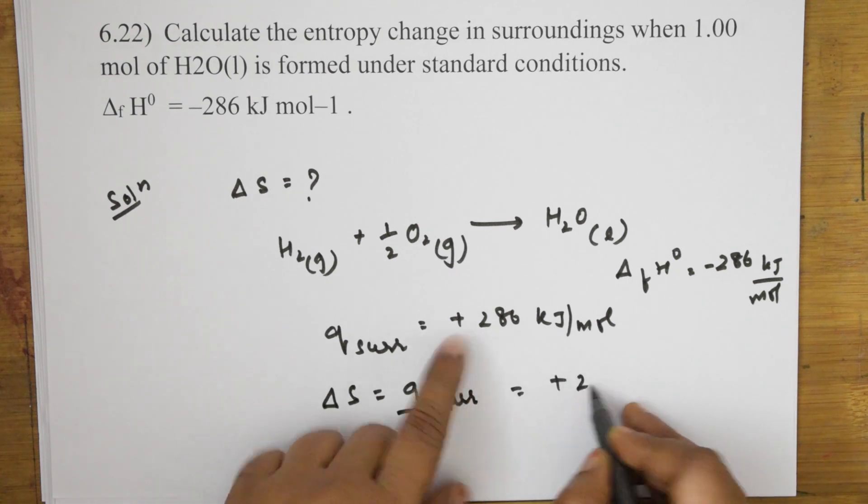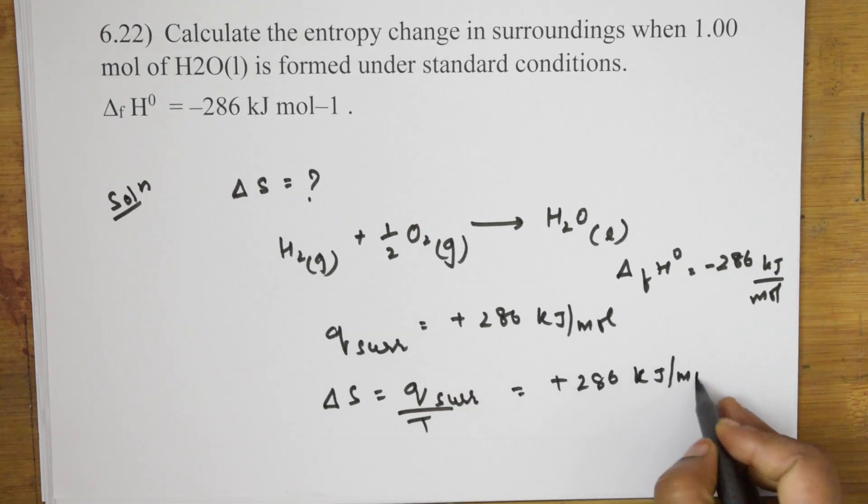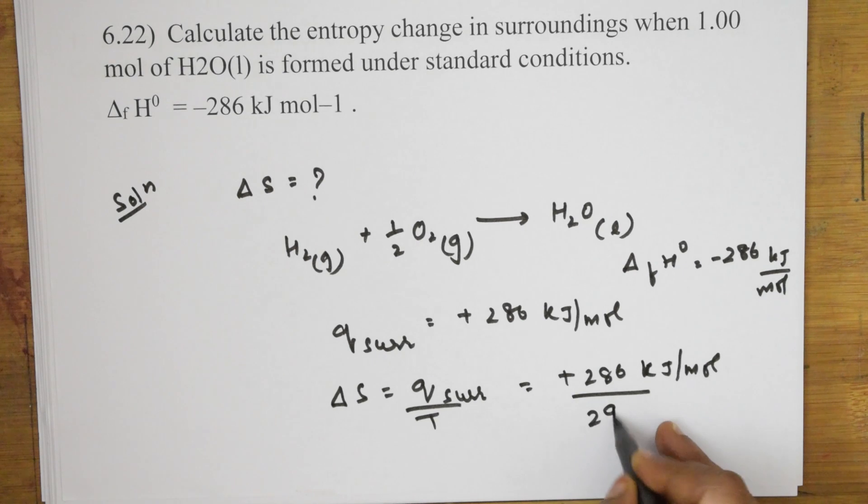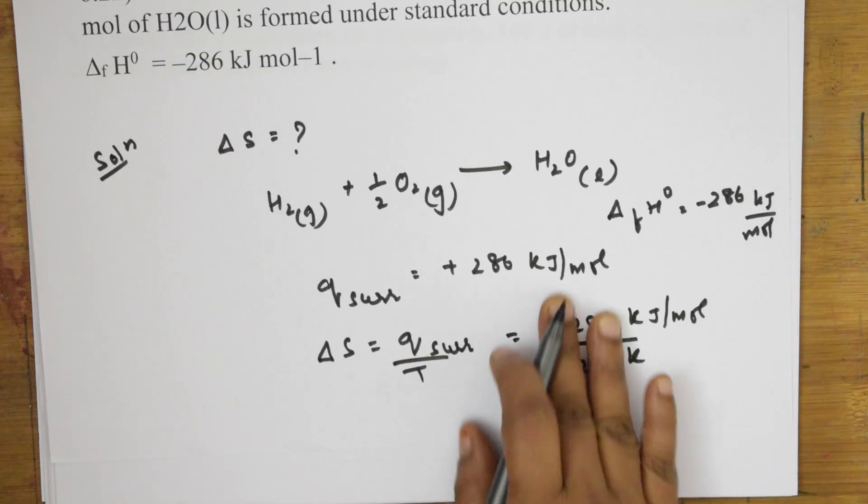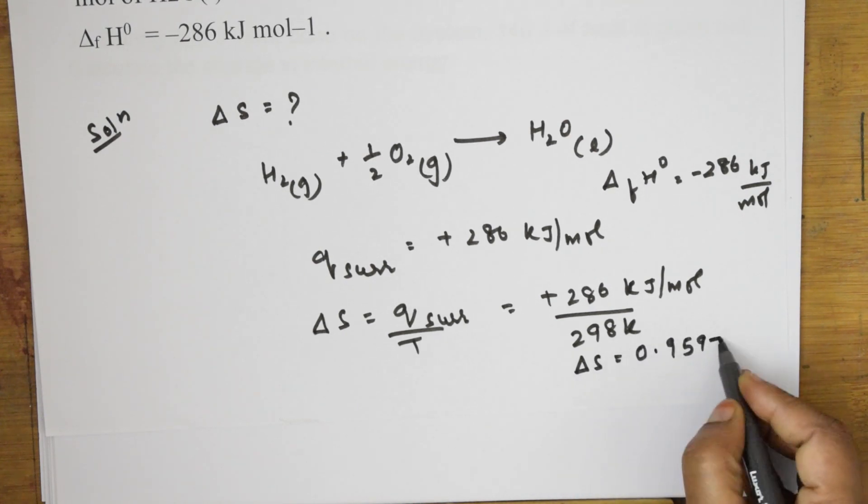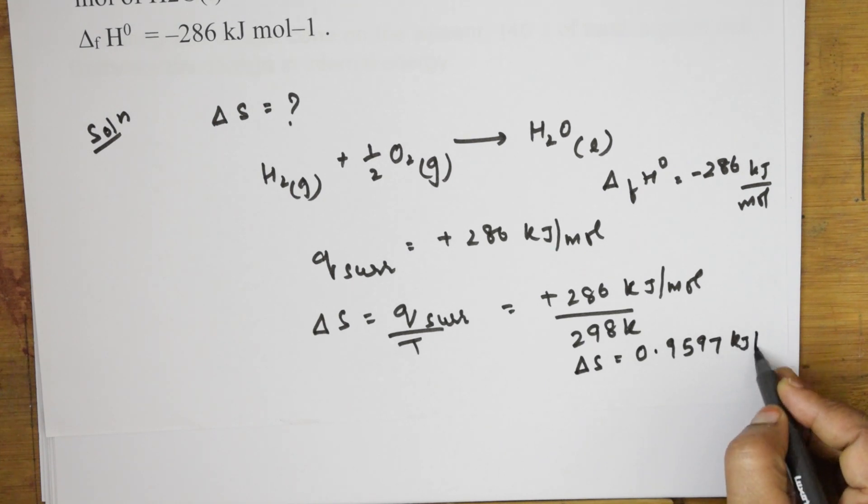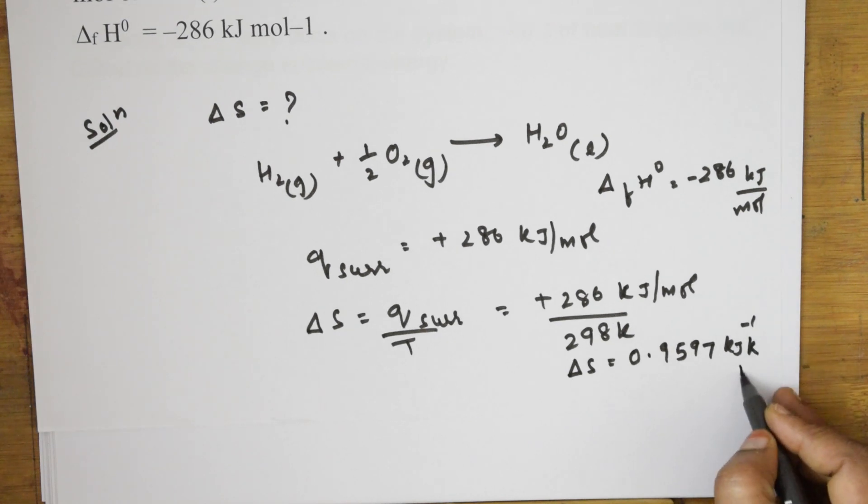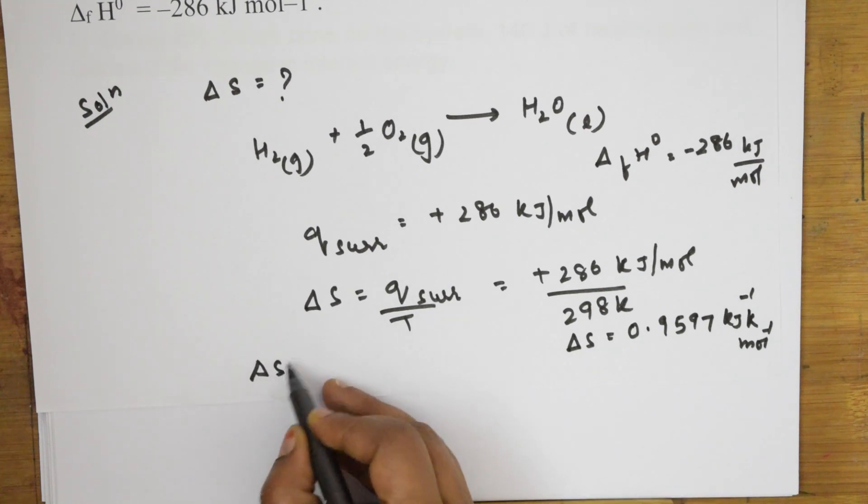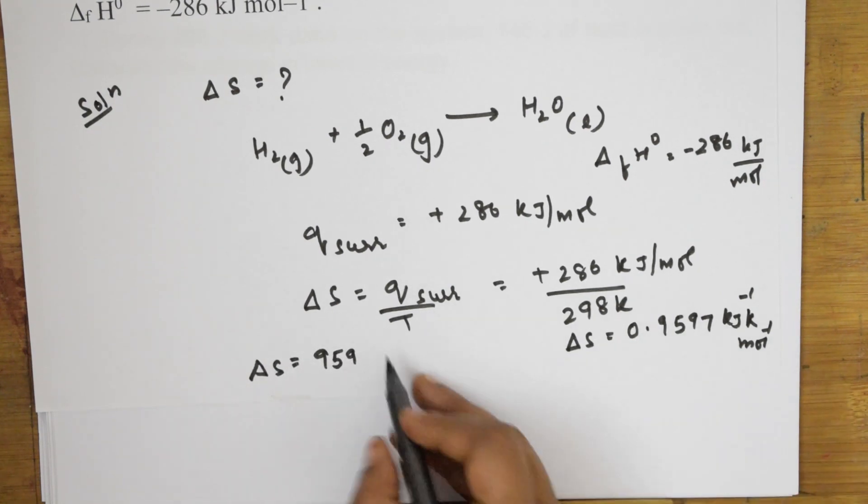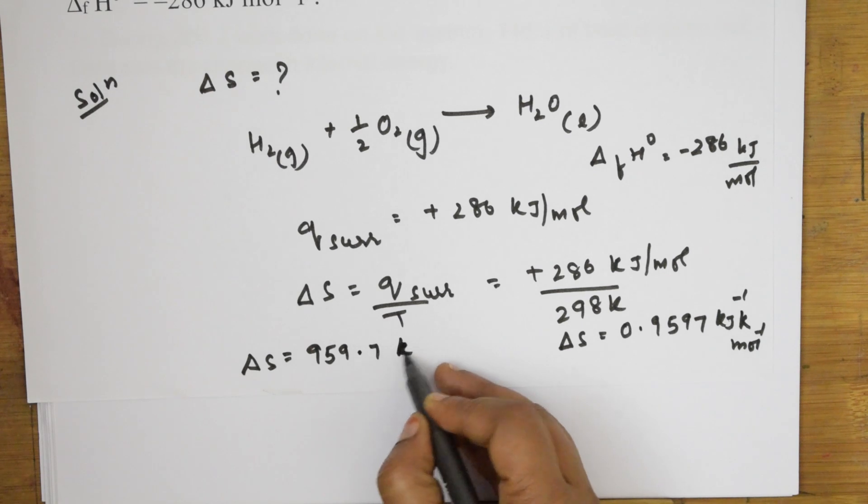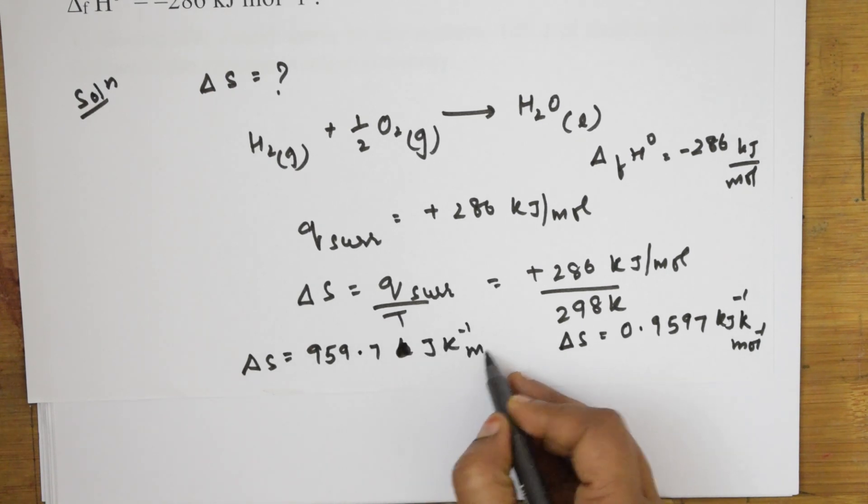So, how much is Q surrounding plus 286 kilo joule per mole? How much is T value? It is like standard temperature that is 298 Kelvin. How much do I get here? Then I solve delta S value. I get equal to 0.9597 kilo joule Kelvin. Because this goes above, this becomes Kelvin inverse, mole inverse. Further, I can write this as, I can write it as delta S is equal to 595. I am shifting the decimal, 595.7 joule Kelvin inverse, mole inverse.